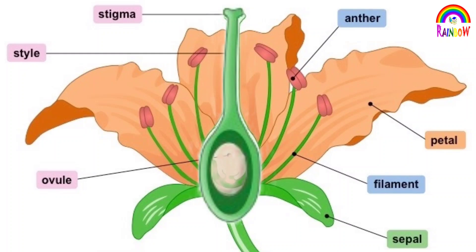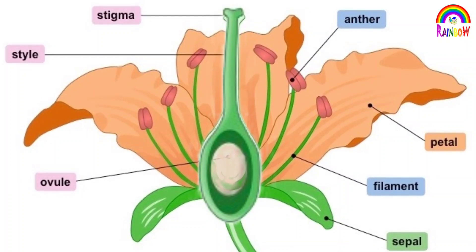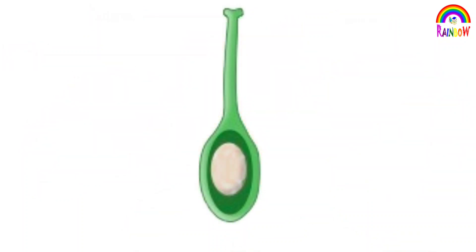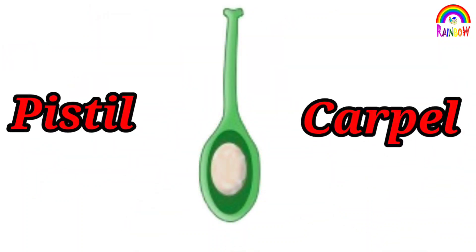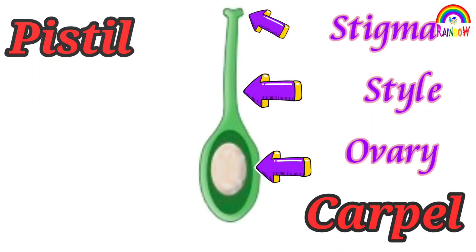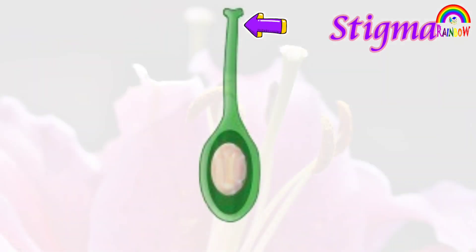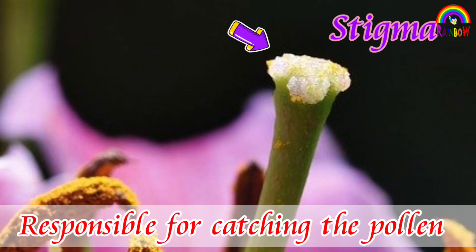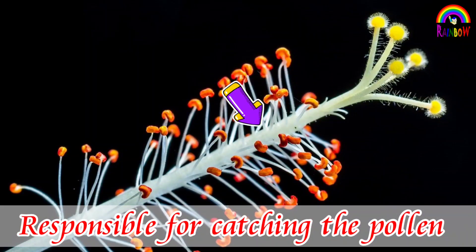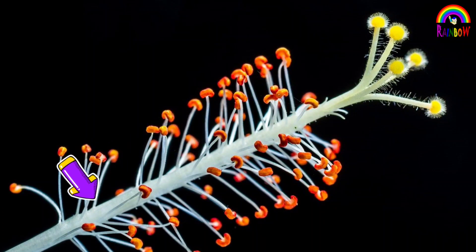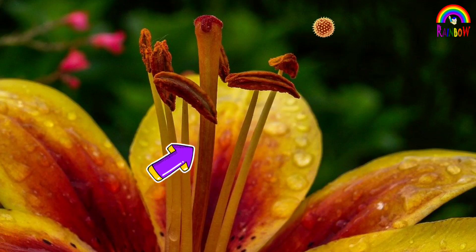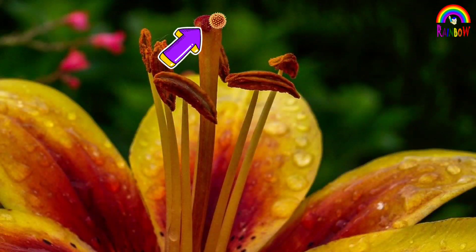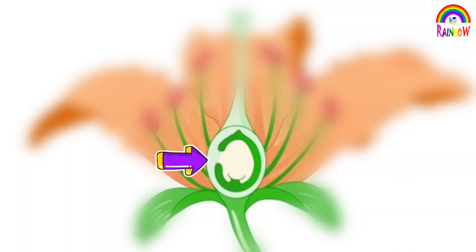The innermost part of the flower contains a female reproductive structure known as pistil or carpel. Pistil or carpel is comprised of stigma, style and ovary. Stigma is the sticky receptive tip of the pistil that is responsible for catching the pollen. Style is the tube-shaped connection between stigma and ovule which elevates the stigma to catch pollen.